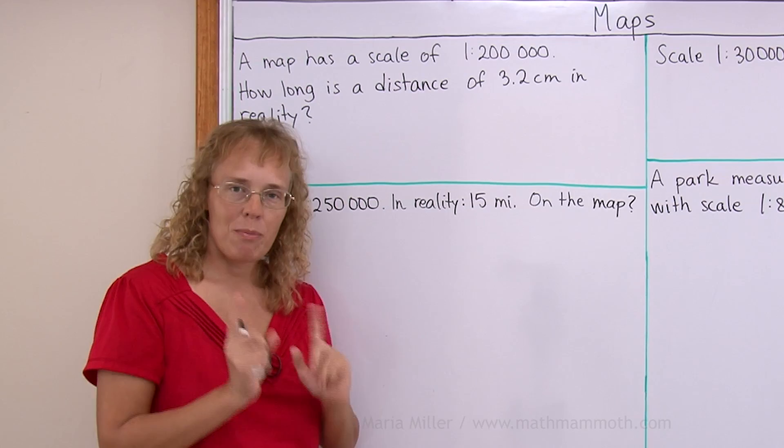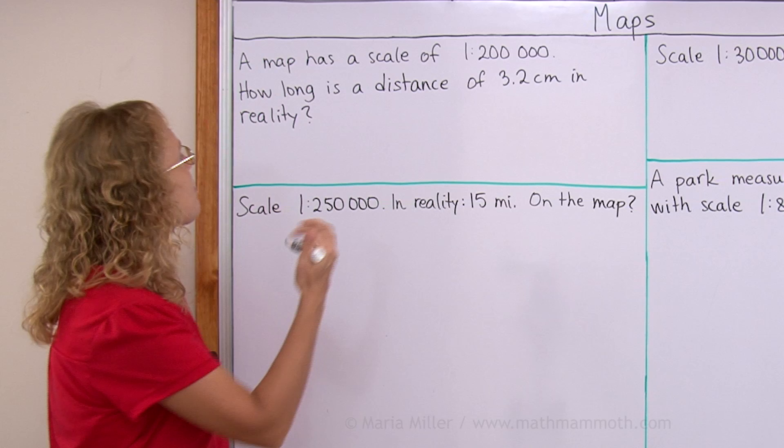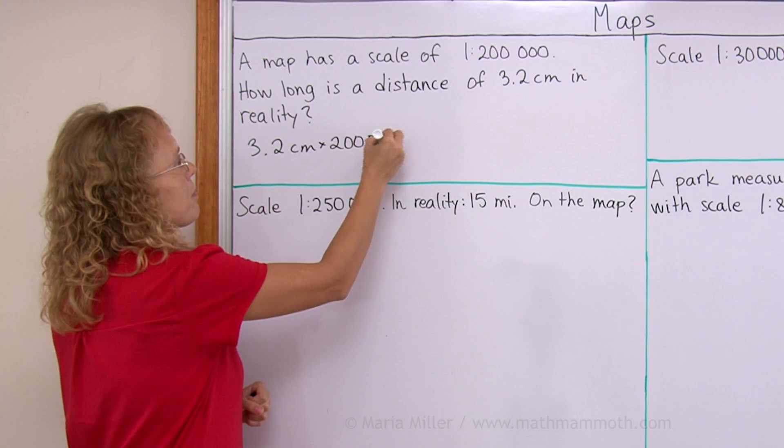So for example, if we have a distance of 3.2 centimeters on the map, then to find that in reality we multiply this times 200,000. So we take 3.2 centimeters times 200,000.